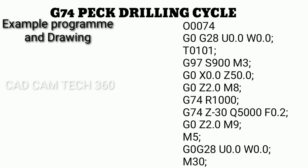G97 S900 M3: G97 is constant surface speed off, 900 RPM, and M3 is clockwise spindle rotation. Then G0 X0.0 positions the tool at the part center, and Z50.0 means there is a 50mm gap between the part and the drill bit.